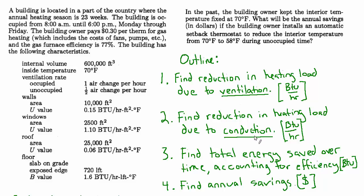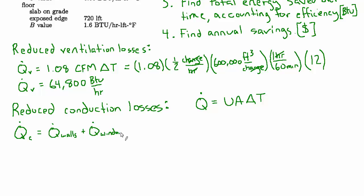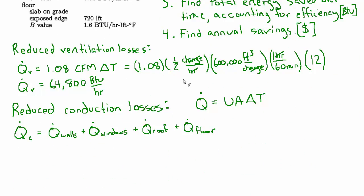Next, find the reduction in heating load due to conduction through the walls, windows, roof, and floor. In all cases the formulation is Q equals U times A times delta T, where U is the overall heat transfer coefficient and A is the area, done individually for each surface and summed. The total conduction loss equals the loss through the walls plus windows plus roof plus floor. The delta T is reduced by 12 degrees because the building is now held at 58 instead of 70 during unoccupied hours.